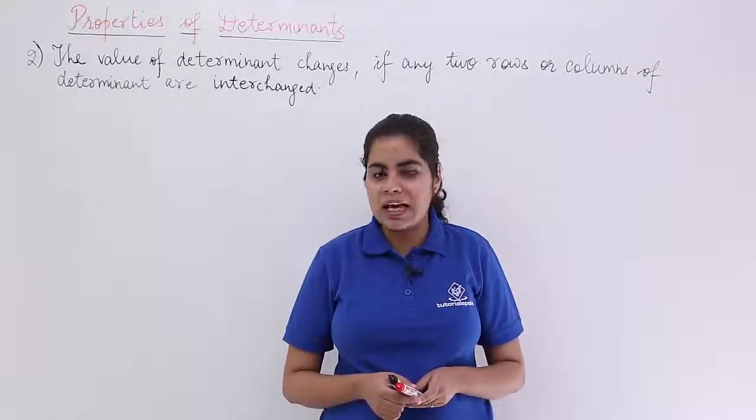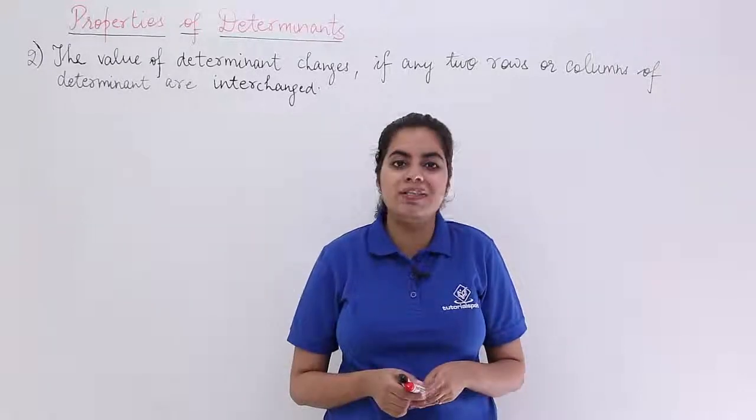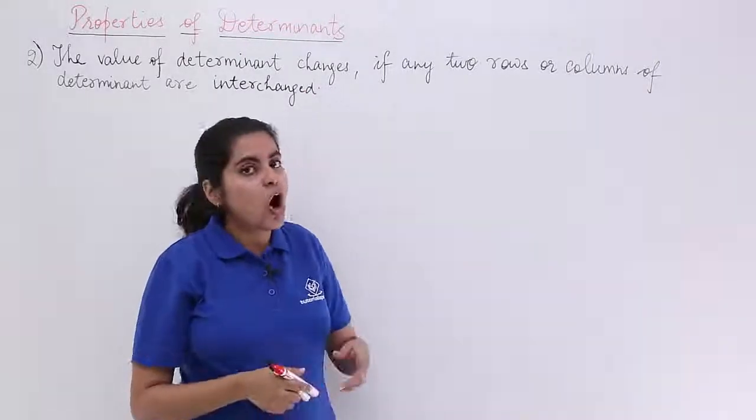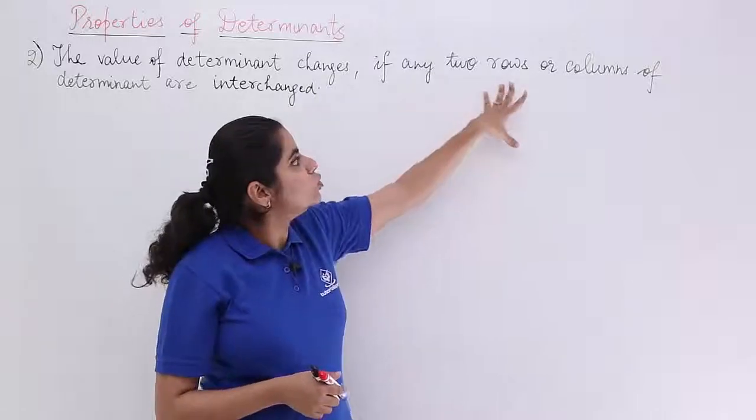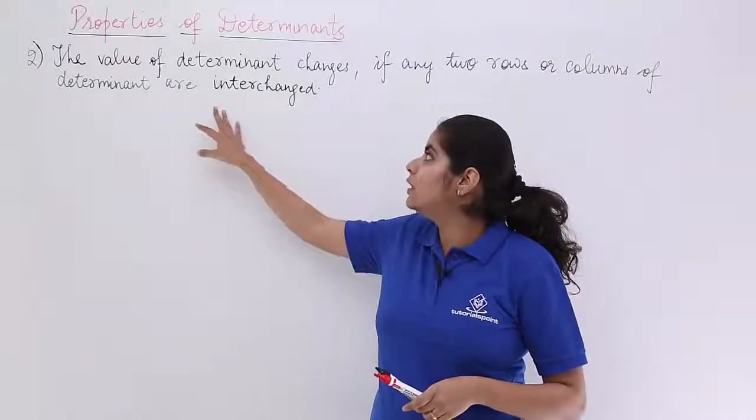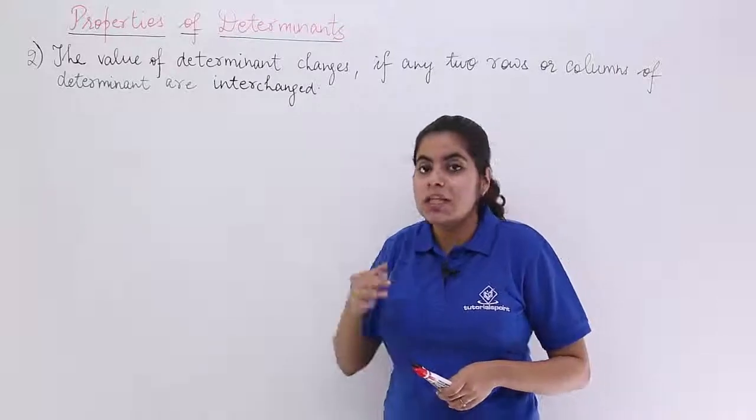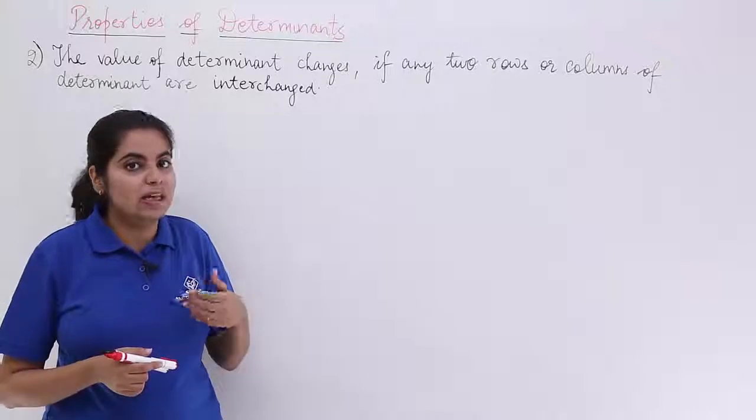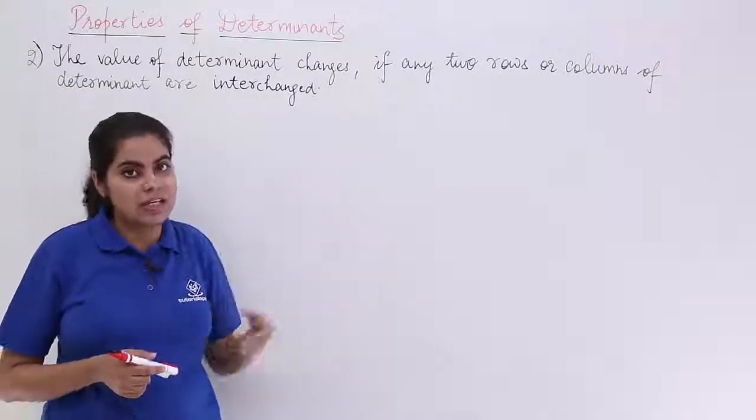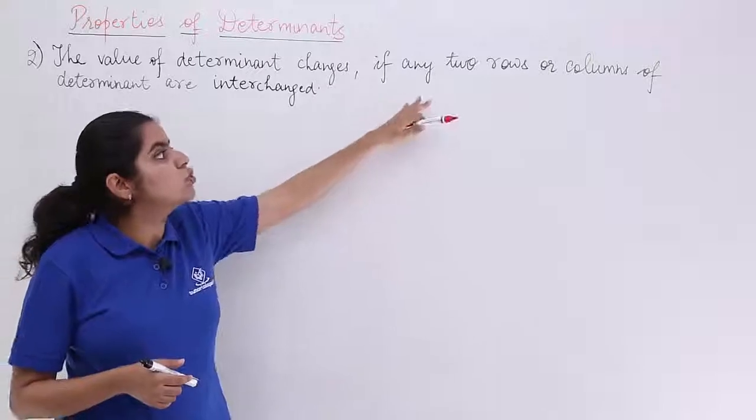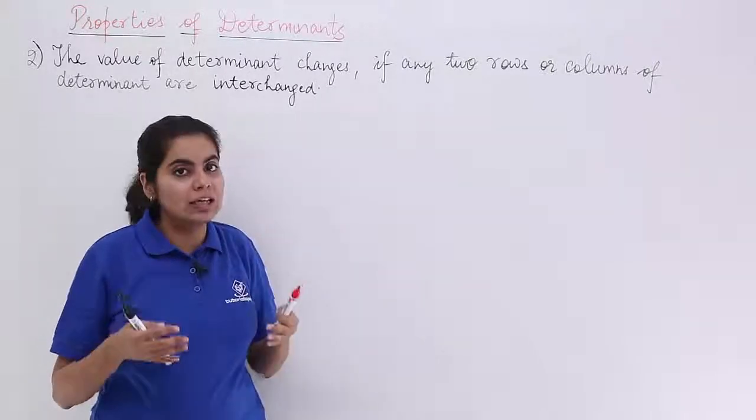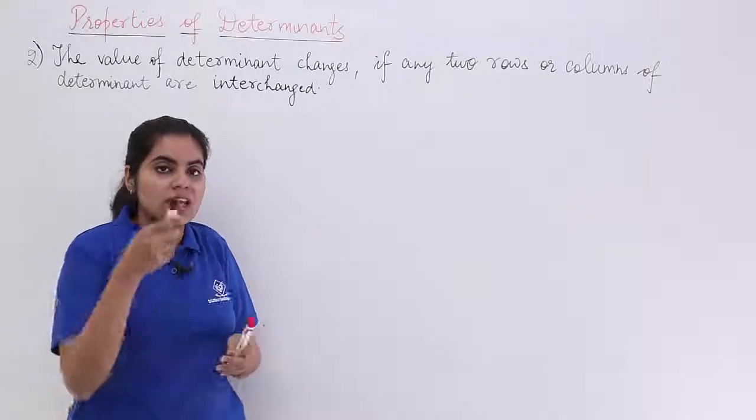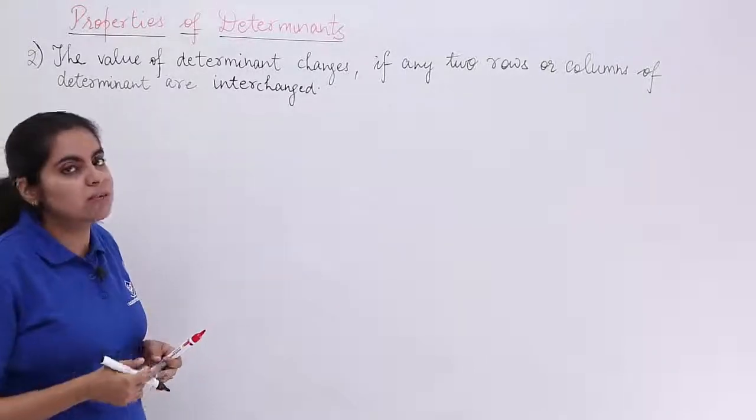Let's read what it is and we'll be seeing some theoretical approach to understand it. Now the value of determinant changes if any two rows or columns of determinant are interchanged. These properties you have to memorize and practice as well. So in the first video we had the first property. In this video, we are having the second property which says that if any two rows or columns of a determinant are interchanged, then the value is subject to change. Let's see with the help of some theoretical approach.